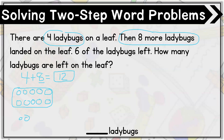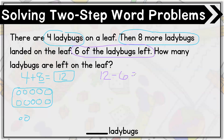But we need to read on, because the problem then says that six of the ladybugs left. So I'm going to start another drawing. Let's first figure out the equation. Remember that we have twelve — that's how many ladybugs are on the leaf. But now six of them left, which means they're going away, so I'm going to be subtracting six. The unknown is how many ladybugs are left on the leaf.